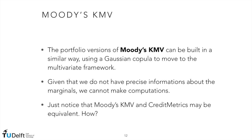However, since these quantities are unknown for us, we cannot make computations. It is important to notice that MODUS K and V and credit metrics can be equivalent. How? Simply if the marginal probabilities of defaults and the correlation matrices are the same in both models.